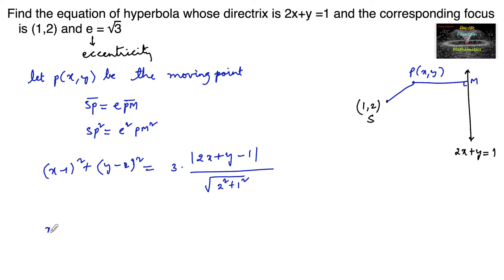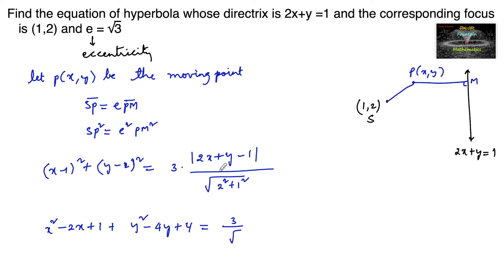Expanding the left side: x square minus 2x plus 1 plus y square minus 4y plus 4, which equals 3 upon root 5 whole square, which is 5. After squaring, we get 3 by 5 times (2x plus y minus 1) whole square.